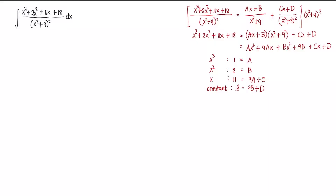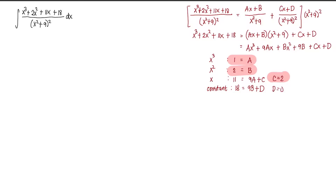We already have two values directly: A = 1 and B = 2. Using A = 1, we solve for C: 11 − 9(1) = 2, so C = 2. Using B = 2, we get 9(2) + D = 18, so D = 0. We now have all four values and can rewrite the integral.